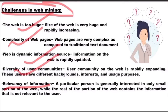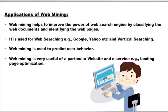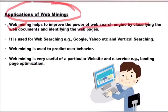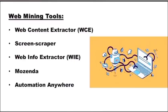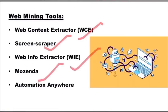Now let's discuss some applications of web mining. Web mining helps to improve the power of search engines by classifying web documents and identifying web pages. यह web searching के लिए use होता है, customer behavior को predict करने के लिए होता है, particular websites को optimize करने के लिए और e-services को optimize करने के लिए भी use होता है। Tools for web mining are: web content extractor, screen scraper, web info extractor, Mozenda, and Automation Anywhere.